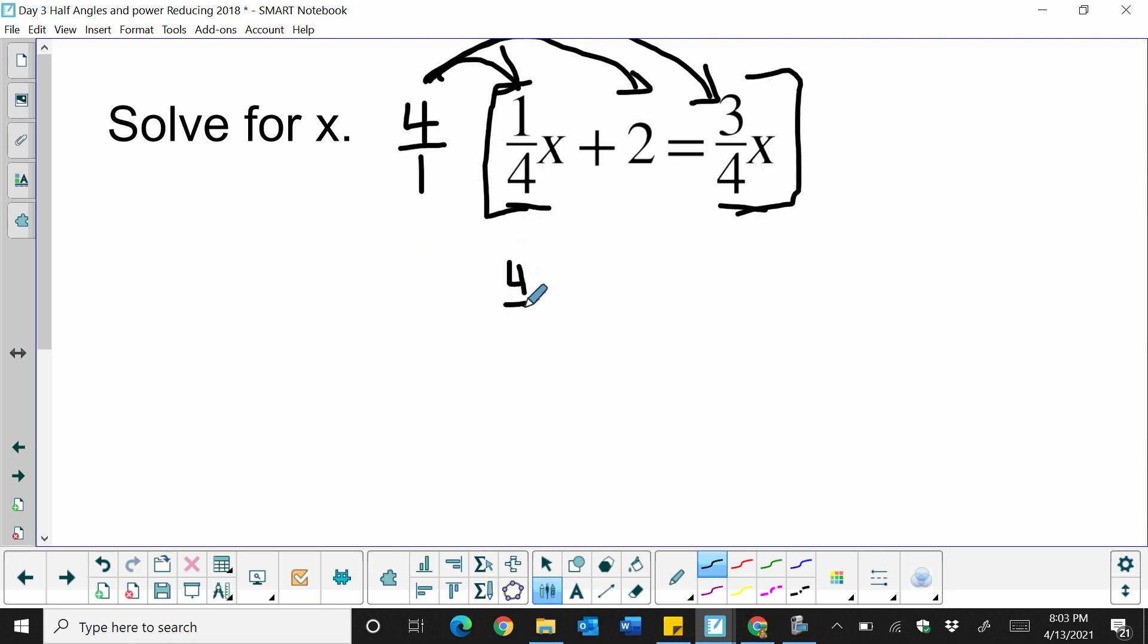I'm going to have 4 over 1 times 1/4x, and then 4 times 2, which is just 8, and then 4 over 1 times 3/4. And I'm writing this as a fraction, so you can see it on this first example.